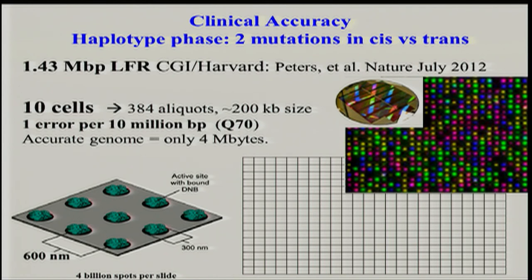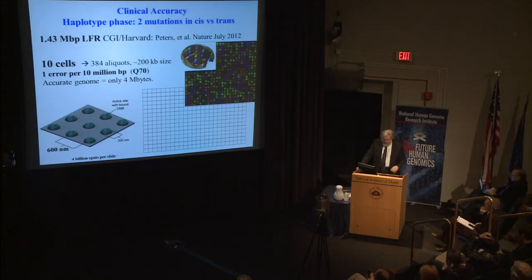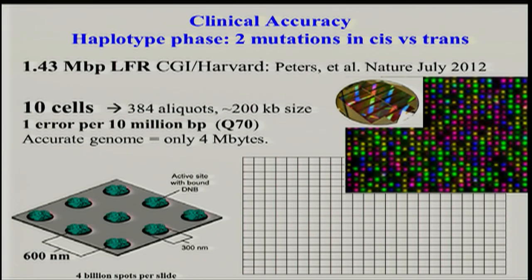Another consequence of having a very accurate genome: we improve accuracy for SNPs to about 1 in 10 million, Q70. When you have a truly accurate genome, you can throw away all the data except for the variants, and it fits into 4 megabytes. Instead of a terabyte of data, you've got 4 megabytes. You could fit the entire population of the Earth on a couple of petabyte drives. So stop worrying about data — just worry about accuracy.